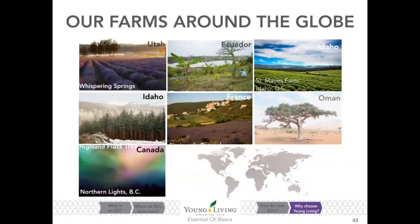To ensure that Young Living is able to control every step of the Seed to Seal process, we own a number of farms and partner or co-op with many others around the world. Gary Young personally travels the globe to scout farms that offer ideal conditions for growing premium botanicals. This personal direct involvement allows us to ensure that each product is of the highest quality. From acres of sweet lavender in Utah to rows of fragrant eucalyptus trees in Ecuador, our global farms are emblematic of the purity and quality of everything we do.